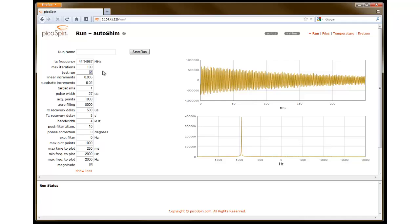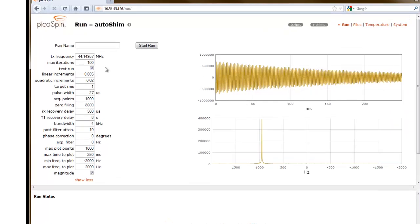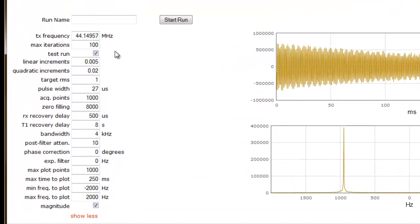The values that appear in the parameter fields will be the last ones used in the script. Next, we want to make sure that the Test Run option is selected. If it isn't, then simply check this box. We'll uncheck this option later when we're ready to do a full shim.